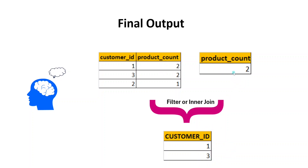Now when I get these two pieces of information from the product and customer tables, I can easily compare wherever the product count is matching and consider only those customer IDs for my report. When joining on product count, the record for customer two — where the count is one — won't match the two from the product table, so that record will be eliminated. Alternatively, I can apply a filter with a WHERE condition where the product count matches. Either way, that record is eliminated. This is the approach to solve this problem.